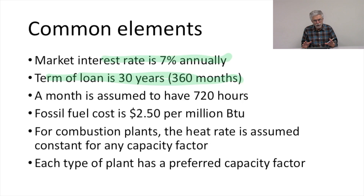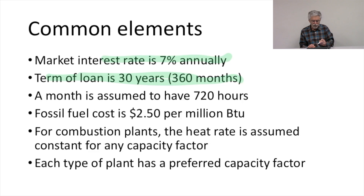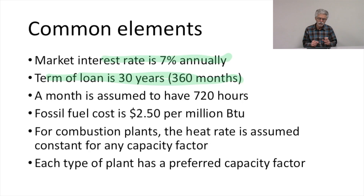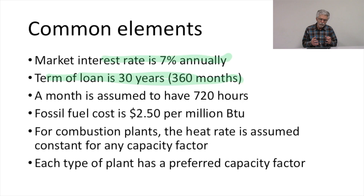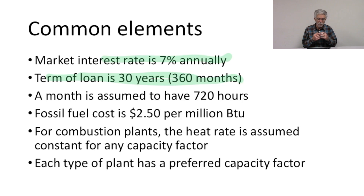Each type of plant has a preferred capacity factor, which is going to depend on lots of things — the ramp rate, the variable costs, and many other characteristics of the plant. As we go through each of our four example plants, we'll think about what the likely capacity factor is that we would design this plant for, and what our plan would be for the use of this power plant.